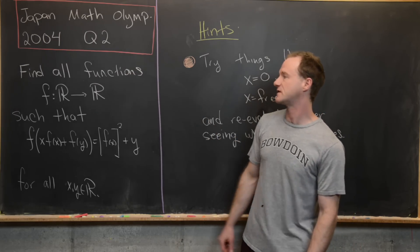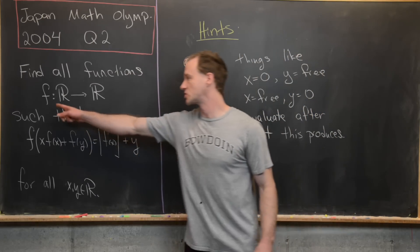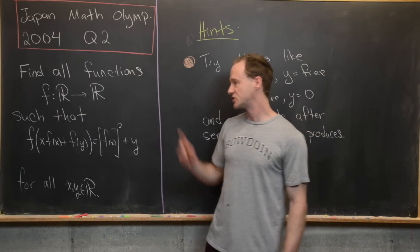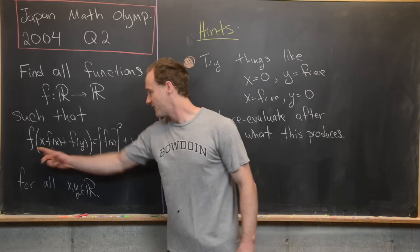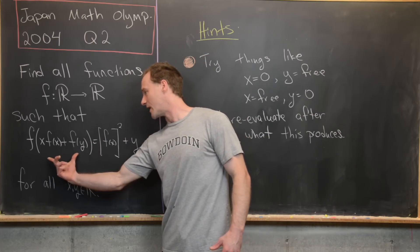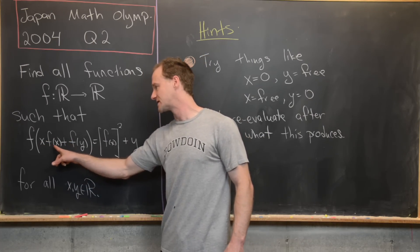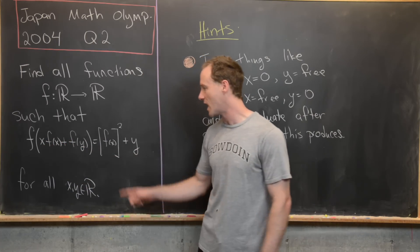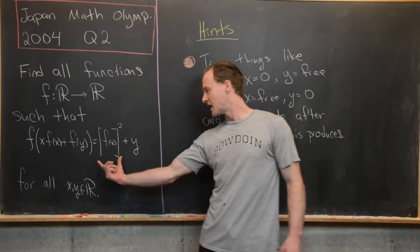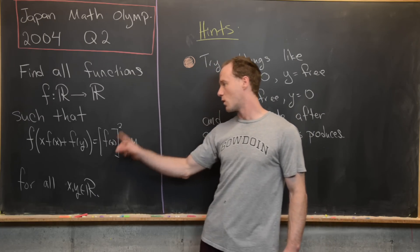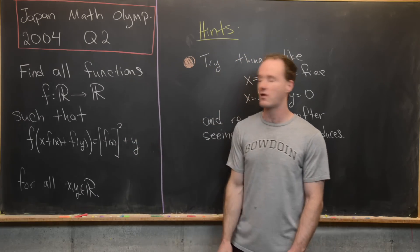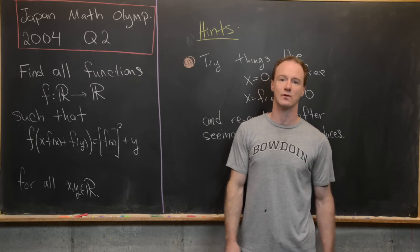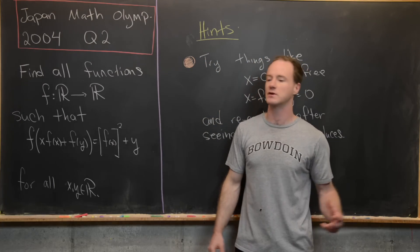Our goal is to find all functions from the real numbers to the real numbers such that f evaluated at x·f(x) + f(y) is equal to f(x)² + y, and that has to be true for all x and y in the real numbers.